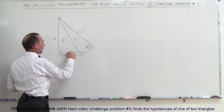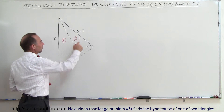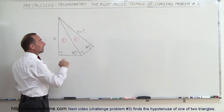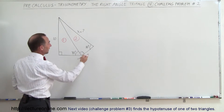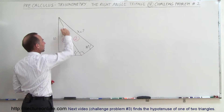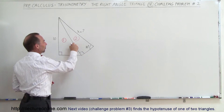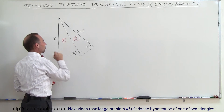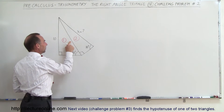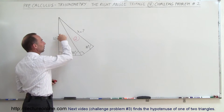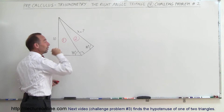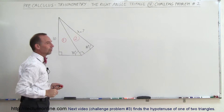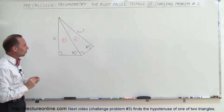Notice that they're both right triangles. In order to find out what x is equal to, we need to have at least one other side known — either this side here or this side here. Since this side is common to both triangles, it's probably better to find it using triangle number one, and then use that to find x for triangle number two. That's our strategy.